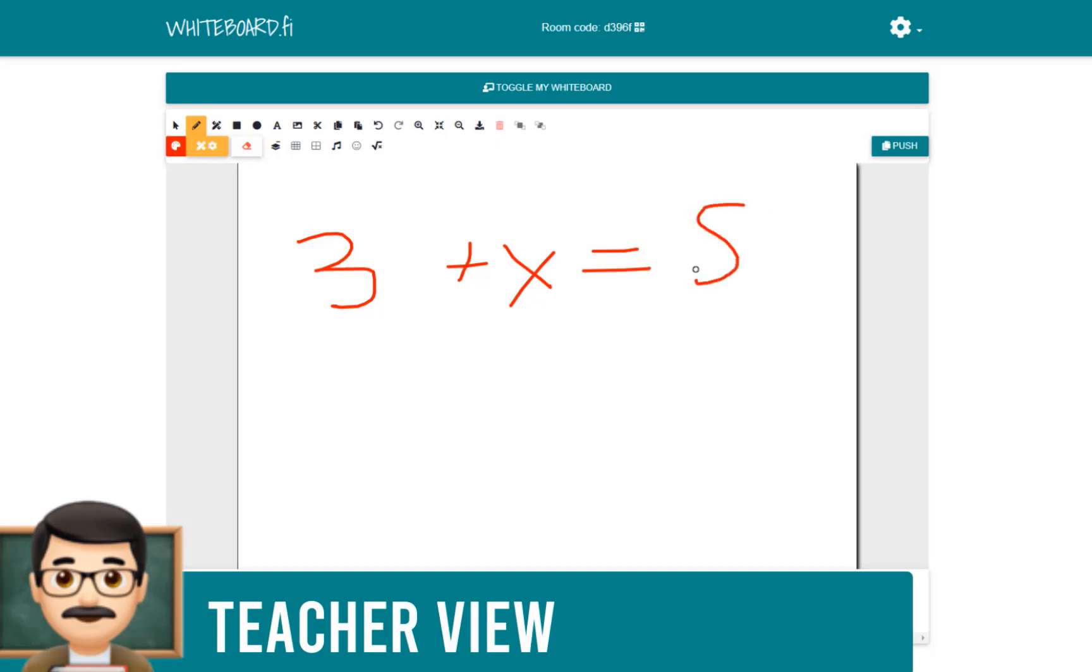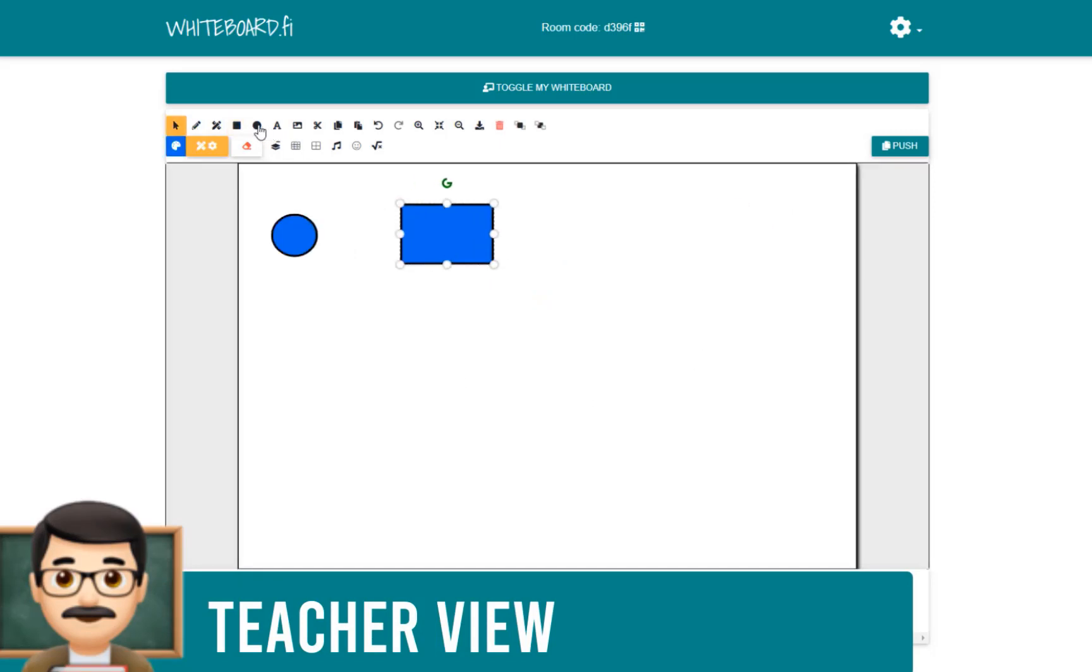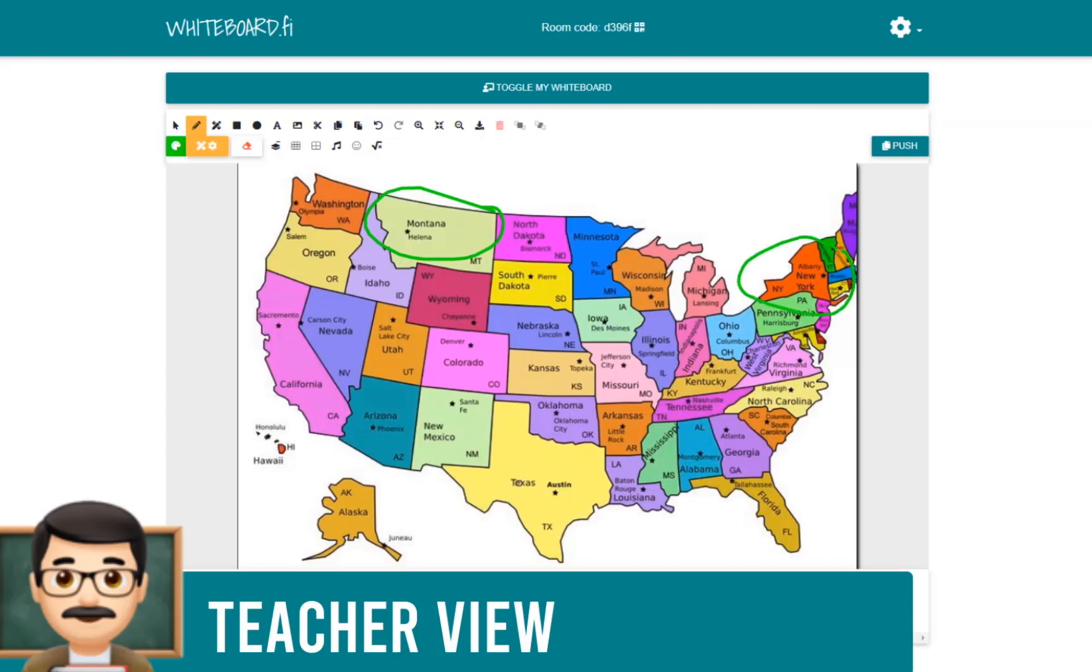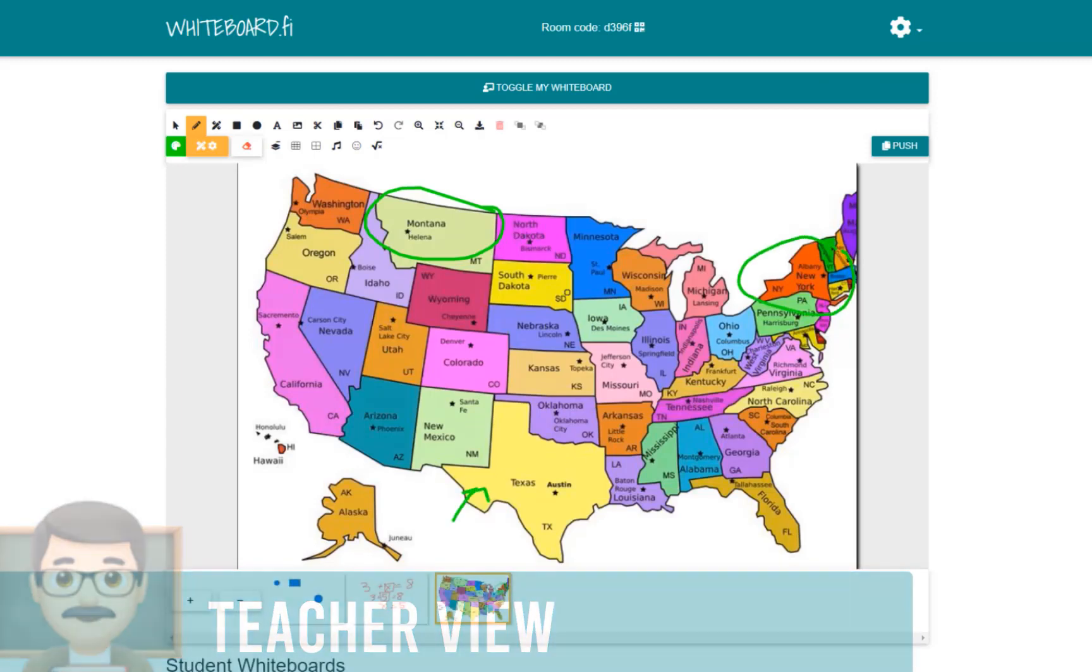As a teacher, I have a lot of the same functions that I do with other digital whiteboard software. I can add text, shapes, drawings. There's even a way that I can upload a photo onto my canvas which might be helpful for modeling.